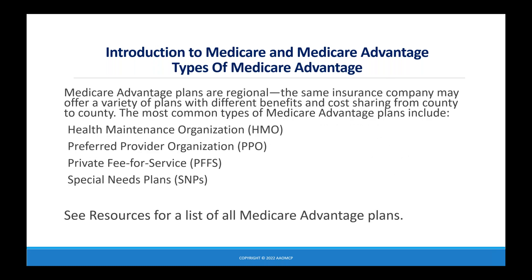Medicare Advantage plans are regional. The same insurance company may offer a variety of plans with different benefits and cost sharing from county to county. The most common types of Medicare Advantage plans include HMO, PPO, PFFS, and SNPs — special needs plans. You can see the essential resources section for a list of all the Medicare Advantage plan types.